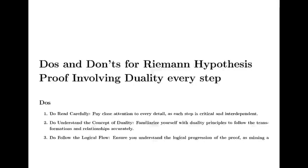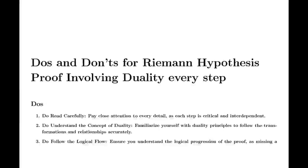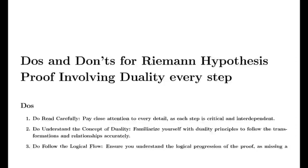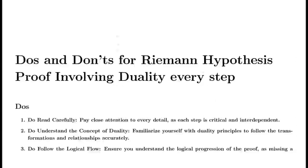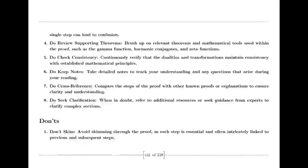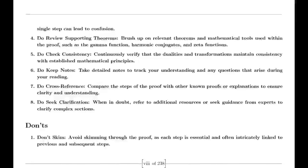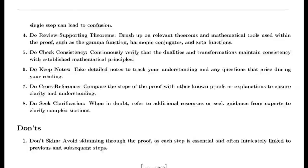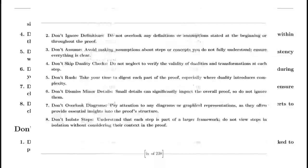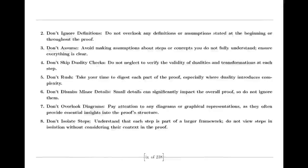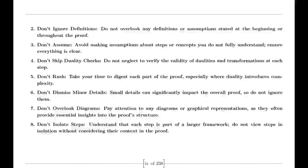Euler also tackled the Basel problem, concerned with finding the exact sum of the reciprocals of the squares of the integers. By examining the sine function and its product representation, Euler derived a formula for this sum, showing it equals pi squared over 6. This was a significant achievement in mathematics, highlighting Euler's ability to uncover connections between different mathematical concepts.